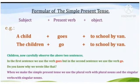Formula of the simple present tense. A sentence in simple present tense has a subject, a present verb, and an object. Look at the given examples. First: a child goes to school by van. Second: the children go to school by van.